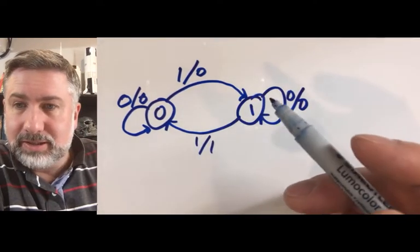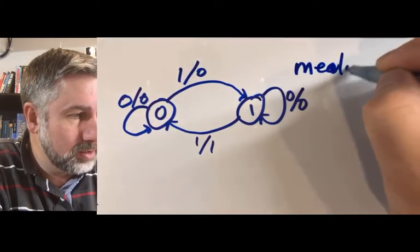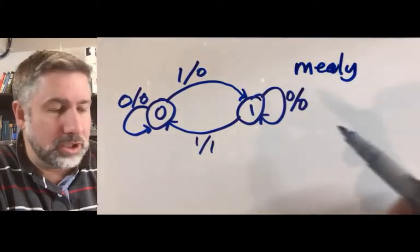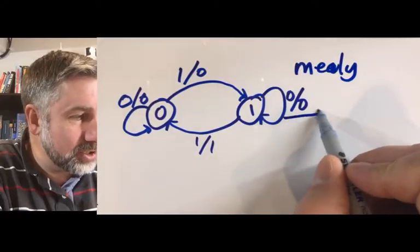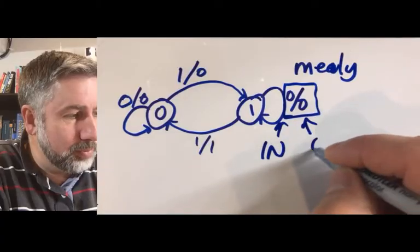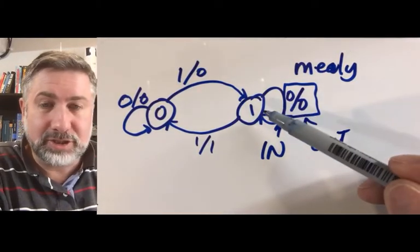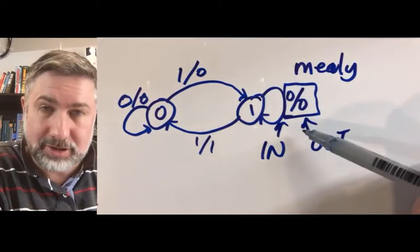This is a Mealy machine. And you can tell it's a Mealy machine because the transitions are indicated by an input and an output. That output then is a function of not just the state that I'm in but also the transition that I'm making.